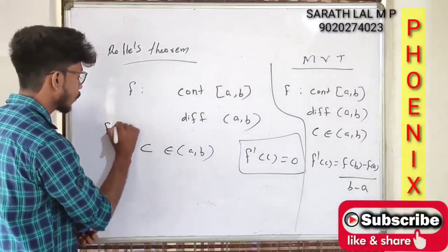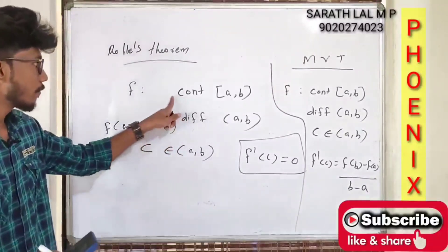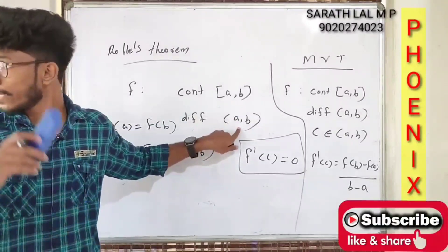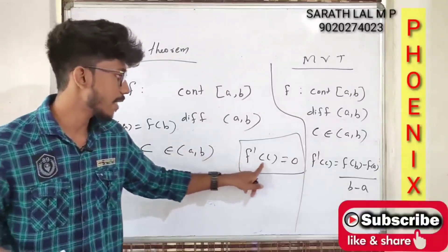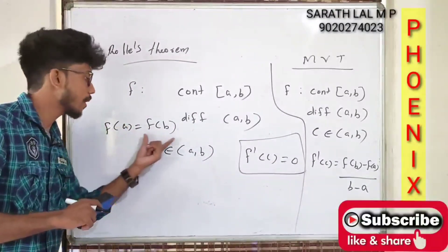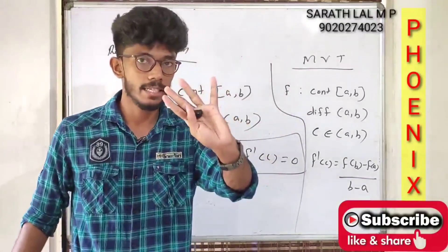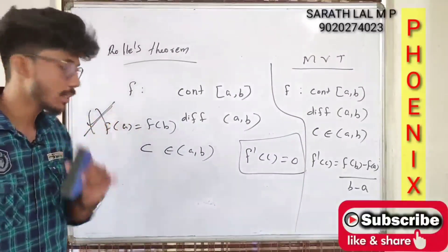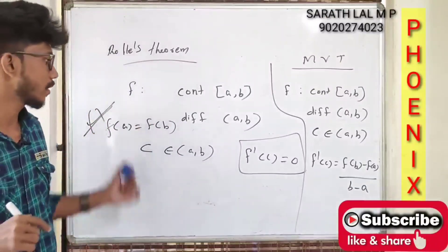For Rolle's theorem, the additional criteria is f(a) equals f(b). f is continuous in closed interval, differentiable in open interval, then there exists a point c between a and b such that f'(c) equals 0. If f(a) is not equal to f(b), Rolle's theorem does not apply.